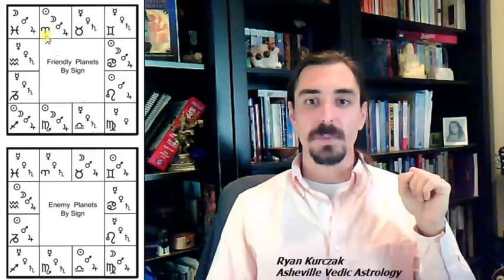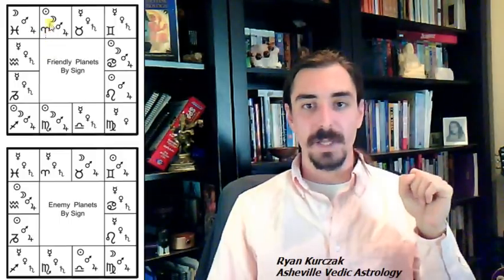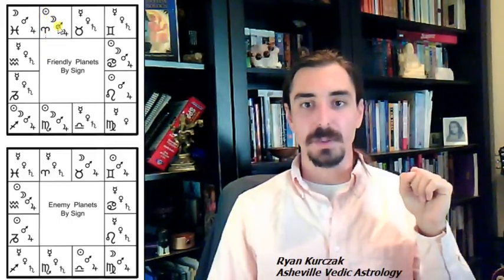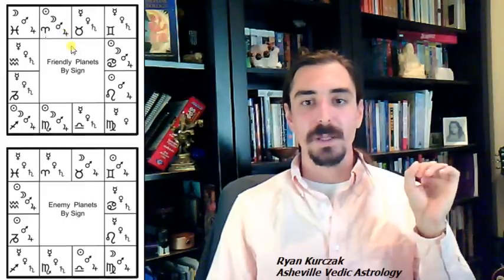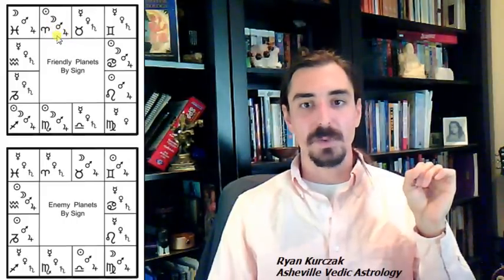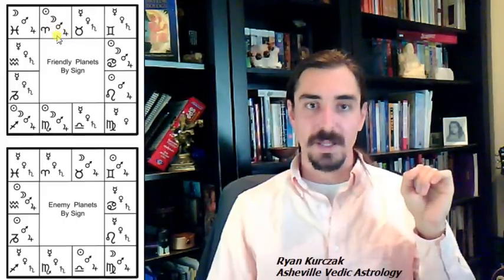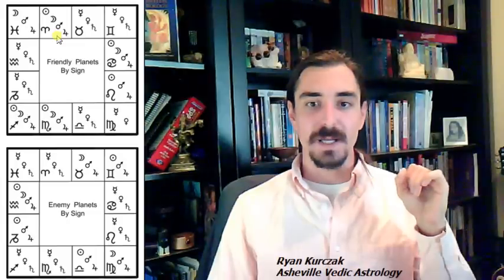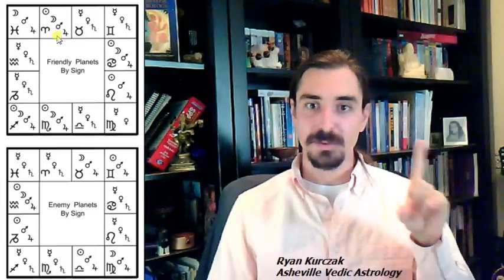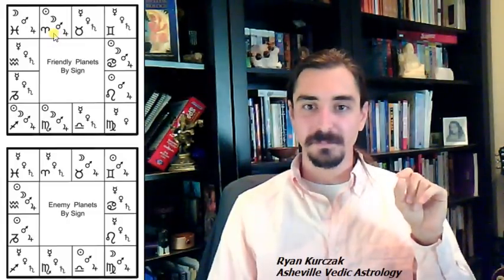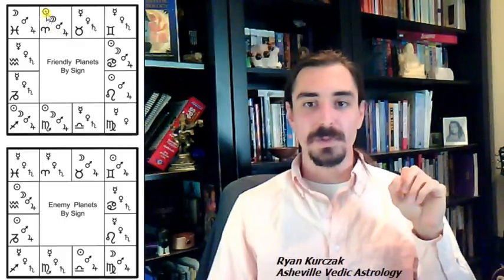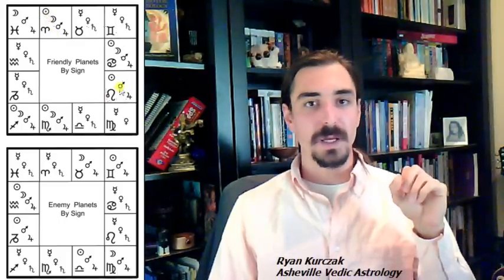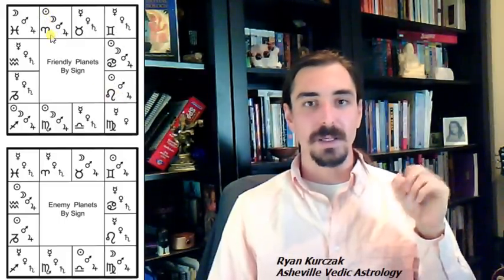So if we see here we see that Aries, the friendly planets are Sun, Moon, Mars, and Jupiter. Why is that? Well, it's because these are planets that rule angles and trines. These are signs that help us mostly, angles and trines. So it's not across the board. But let's look. So with the Sun, 1, 2, 3, 4, 5. Well, the Sun rules the 5th house from Aries, which is a trine. The Moon rules the 4th house from Aries, which is an angle.